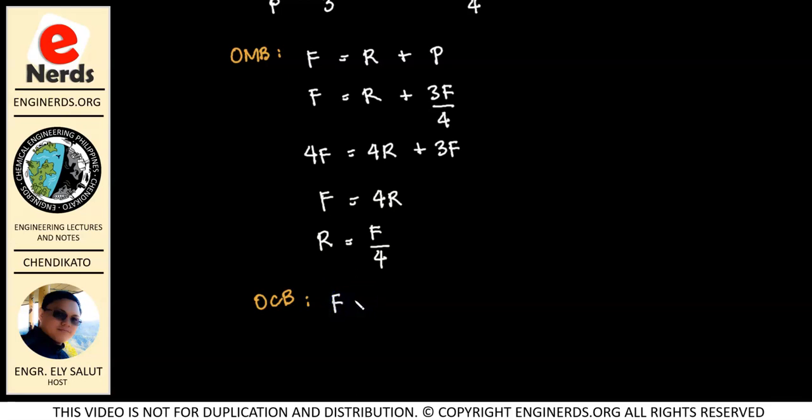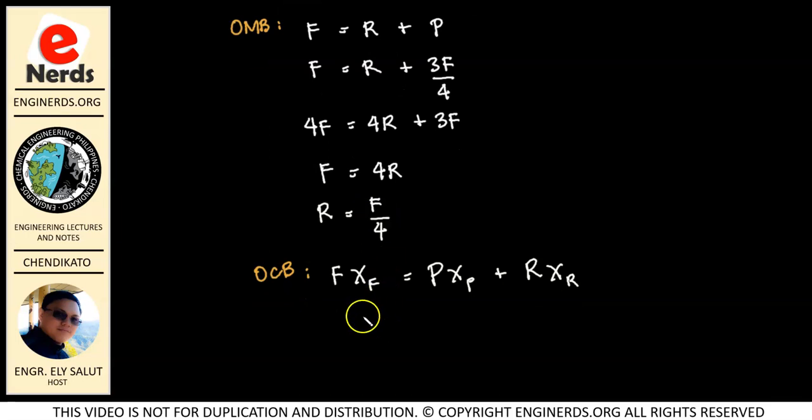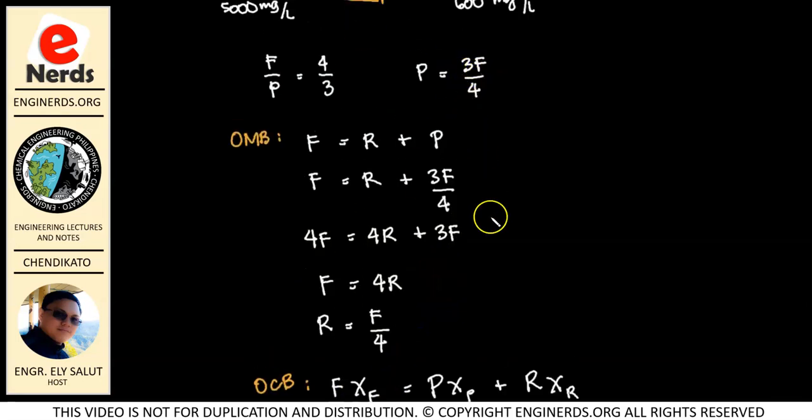So that means we have, for our feed, we'll multiply that to our dissolved solid for F equal to our product times the dissolved solid in our product plus in our reject multiplied to the dissolved solid in our reject. Okay? But we can represent our P and our R as a function of F, no? So let's just substitute. So we have F times XF is equal to our P. So what is our P again? 3F over 4.